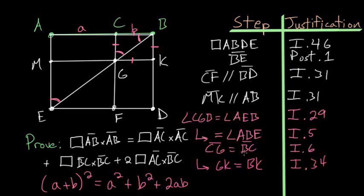Using Common Notion 1 — things equal to the same thing are equal to each other — we've now proven that all sides of quadrilateral CK are equal.